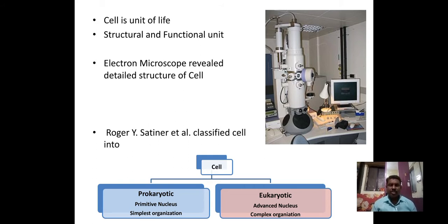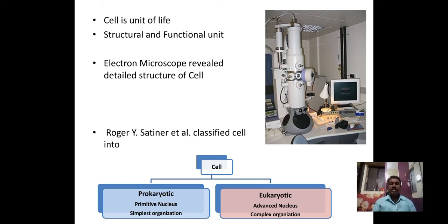A primitive nucleus means the nucleus does not have a nuclear membrane, nucleoplasm, nucleolus, or nuclear pore complex. Such a nucleus is called a primitive nucleus, or not well-developed nucleus. It is also called a nucleoid. This cell shows the simplest organization.